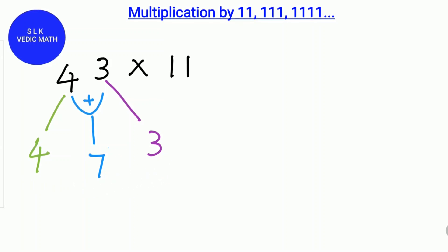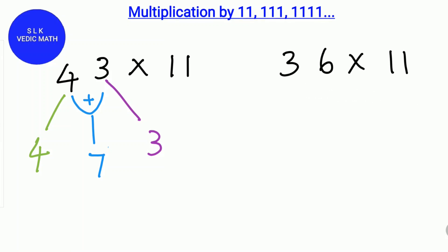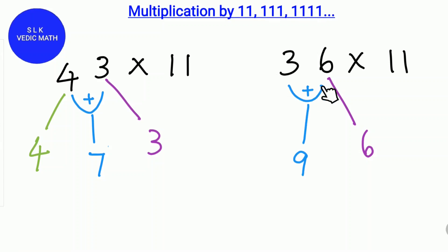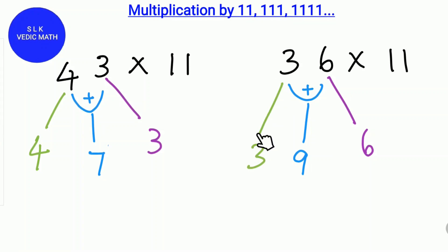Let's try another example: 36 times 11. First, write down the last digit 6 as it is. Next, add the digits 3 plus 6, which is 9. Then write down the first digit 3 as it is. So 36 times 11 is 396. As you can see, this method is so easy.